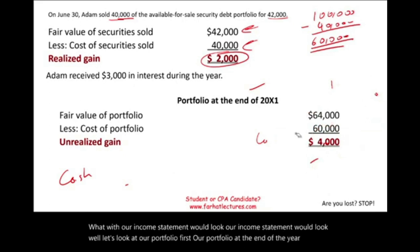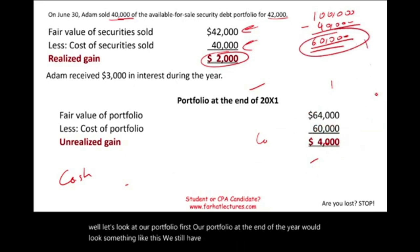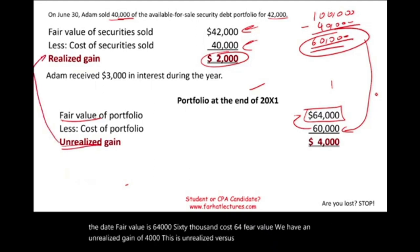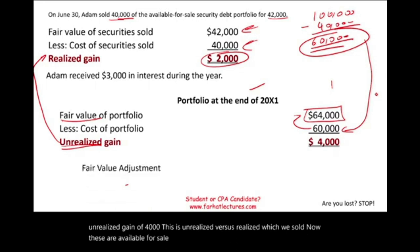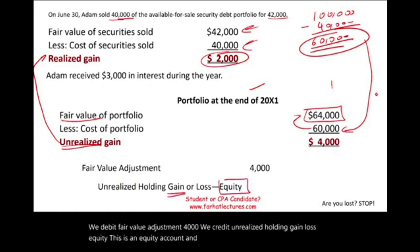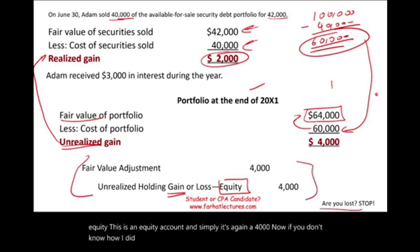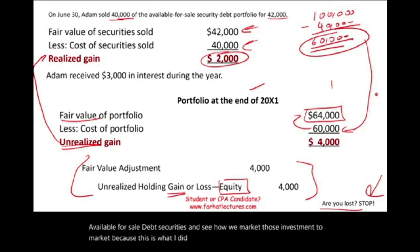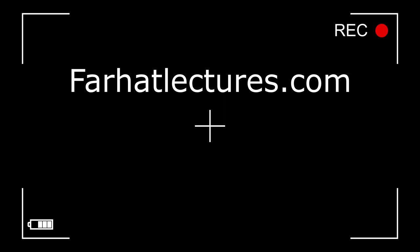At year-end, the $60,000 of remaining securities have a fair value of $64,000, giving an unrealized gain of $4,000. For available-for-sale securities, we debit Fair Value Adjustment $4,000 and credit Unrealized Holding Gain/Loss — Equity $4,000. This increases the investment to fair value. If you're unsure how this works, refer to the available-for-sale debt securities lessons on marking investments to market.